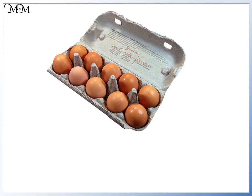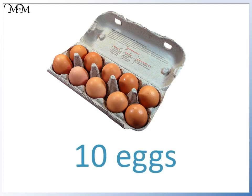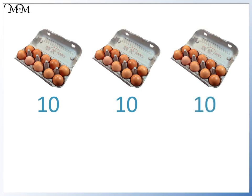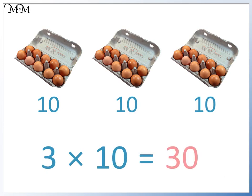Here is a box of eggs. In each box there are 10 eggs. Here are 3 boxes of eggs. We have 10 in this box, 10 in this box and 10 in this box. We have 1, 2, 3 boxes of 10 — 3 lots of 10. 3 times 10 equals 30.